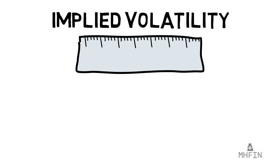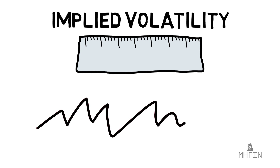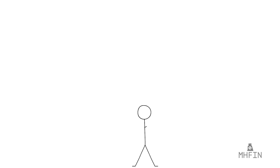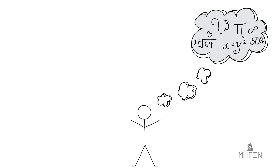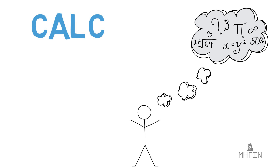For new traders, especially those on Robinhood, understanding IV is critical to achieving success in the world of options. Beware that the foundation of IV, or implied volatility, is based largely on complex mathematical modeling, and while this video is labeled as a deep dive, we're going to be approaching the subject from a more simplistic view.